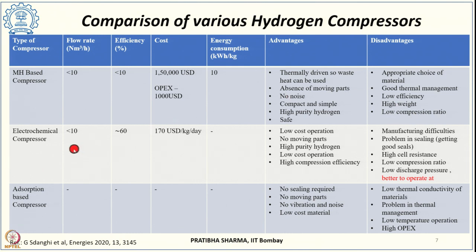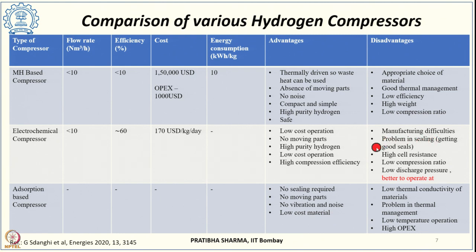Electrochemical compressors can give a flow rate of around 10 normal meter cube per hour with efficiency of 60 percent and cost of 170 USD per kg per day. Advantages include low-cost operation, no moving parts, high purity hydrogen, and high compression efficiency. Problems include manufacturing difficulties, scaling up and sealing challenges, high cell resistance, low compression ratio, low discharge pressure, and they are better operated at lower flow rates and lower pressures.